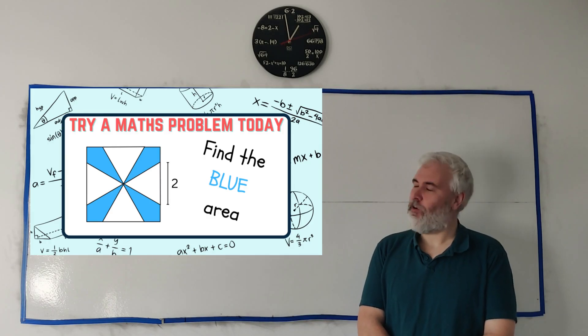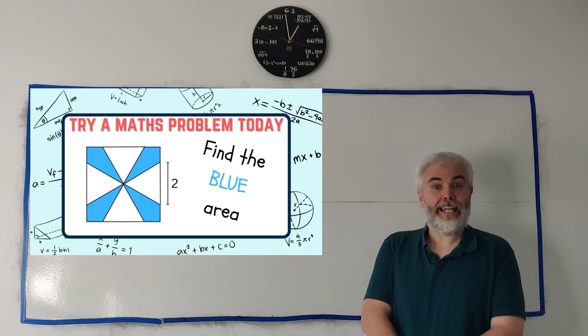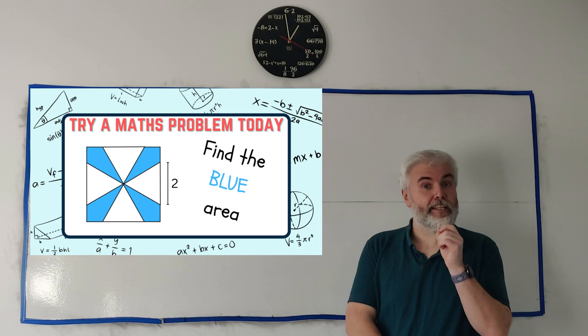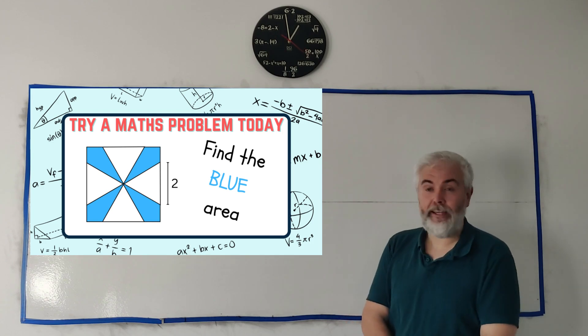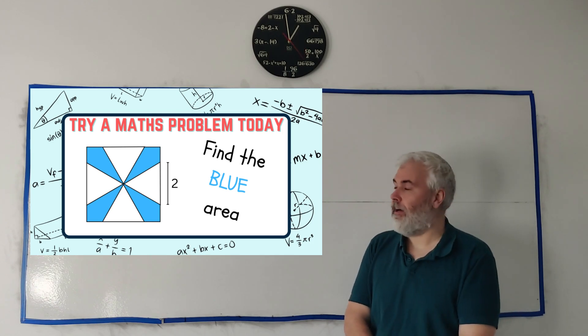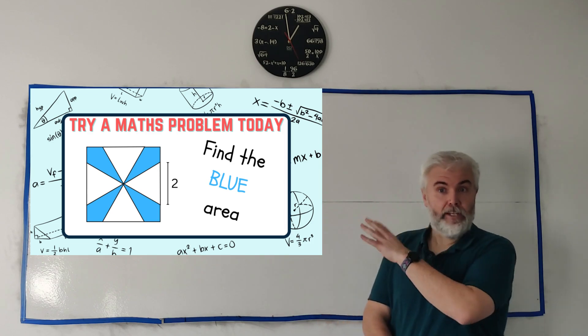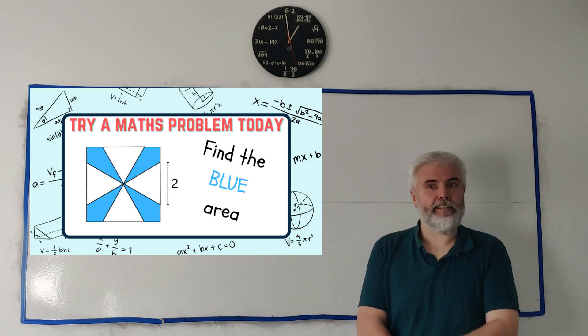Hello and welcome to this week's Try a Maths Problem today. In this question we're only given a very small piece of information. We're told the length of one of these triangles is two. Now I'll also add in that the triangles we see here are equilateral triangles and the shape they're in is indeed a square.